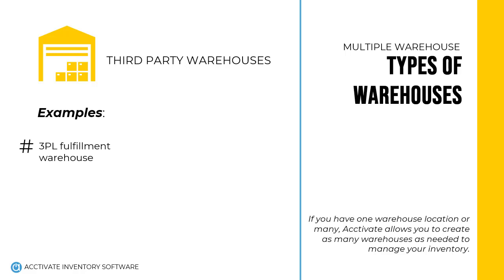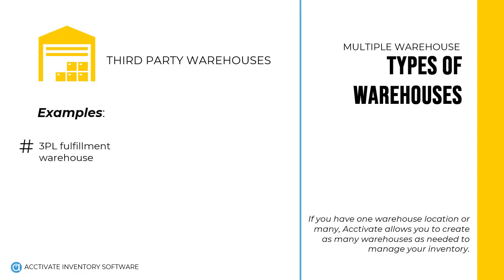Third-party warehouses are those that aren't necessarily owned or managed by your company, but you still need to be able to view how much inventory is at that location. Third-party fulfillment warehouses are a great example because even though the warehouse is doing your order fulfillment, you still need to be aware of the sale of goods so you can purchase more.